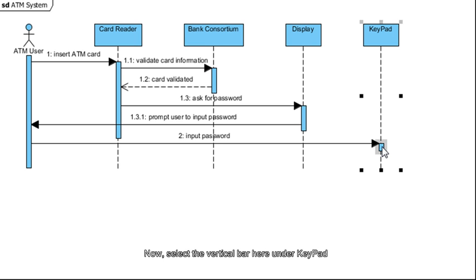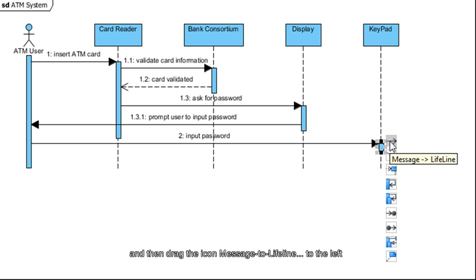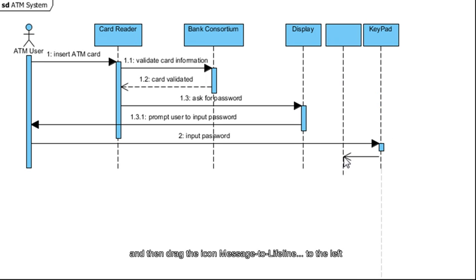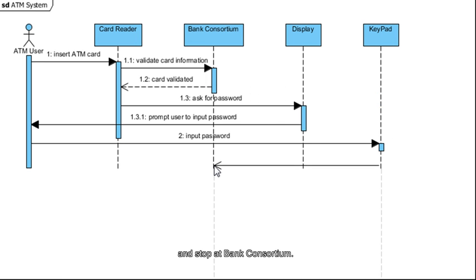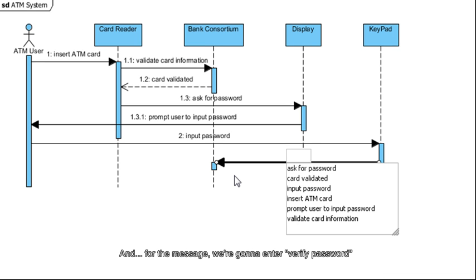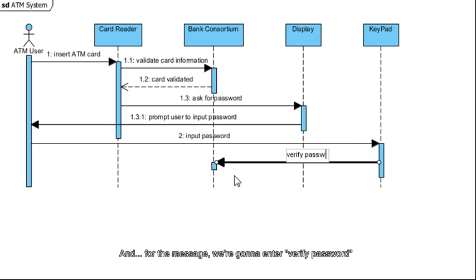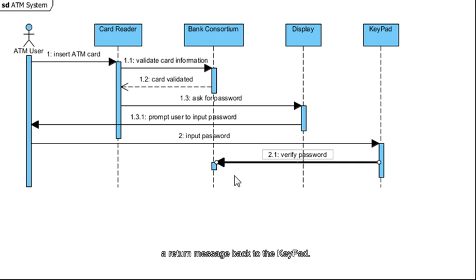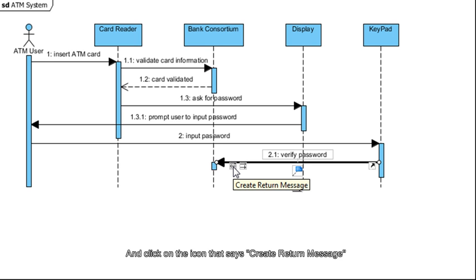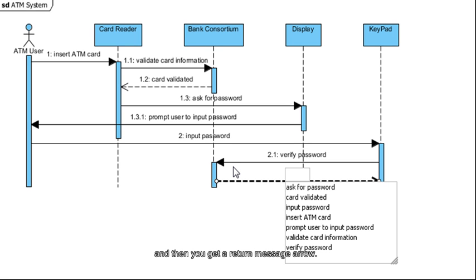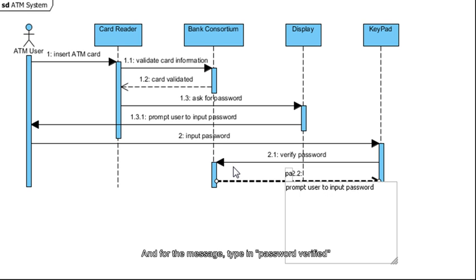Now select the vertical bar here under Keypad and drag the Message to Lifeline icon to the left, pass Display, and stop at Bank Consortium. For the message, enter Verify Password and press Enter. After this message, Bank Consortium will send a return message back to the Keypad. Click on the arrow here and click on the icon that says Create Return Message. You'll get a return message arrow — type in Password Verified and press Enter.